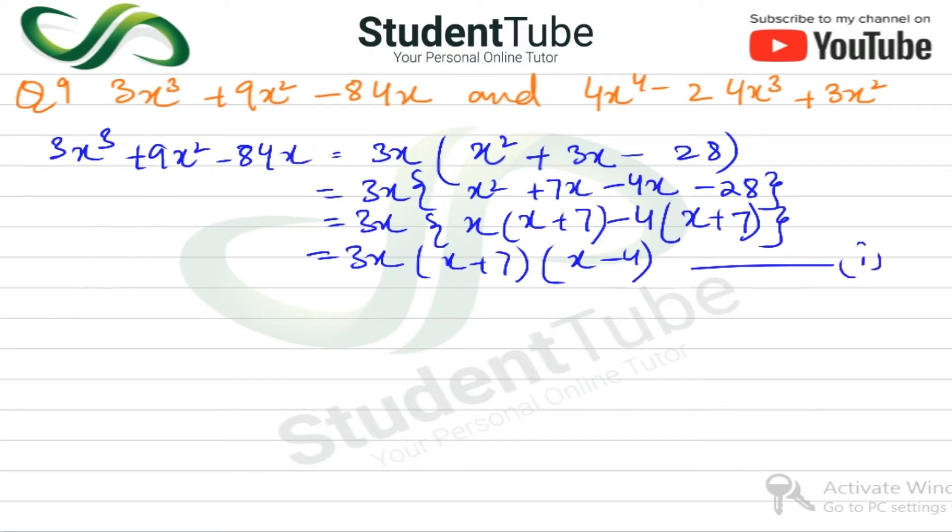Second polynomial: 4x⁴ - 24x³ + 32x². Now here 4x² then x² minus 24, 6, 6, 2x, then 1x, then 32, 32 here, 32, 8.